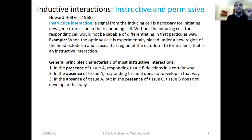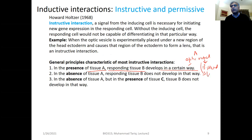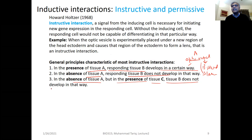For example, in the presence of tissue A, responding tissue B develops in a certain way. The optic vesicle can be A, and B is the head ectodermal region which develops into the lens. In the absence of A, B does not develop that way. And in the absence of A but in the presence of tissue C, B still does not develop that way. This tells you the kind of instructive interaction taking place between A and B - even if you have a third factor that is not the right inducer, B is not going to respond.